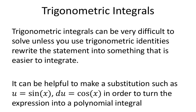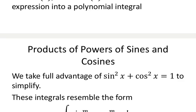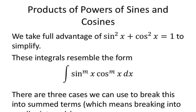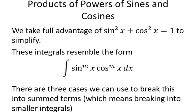You can turn sine squared into 1 minus cosine squared, for example, and the analog with tangents and secants. There are a few general cases described in this chapter that are products of sines and cosines, and they use the sine squared plus cosine squared equals 1 to simplify. These integrals resemble the form of sine to the m power of x times cosine to the n power of x.